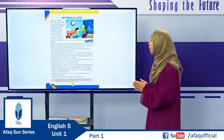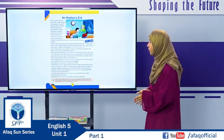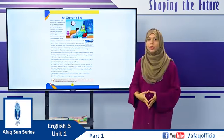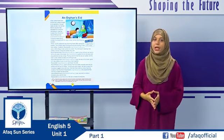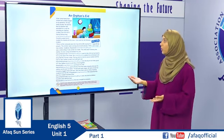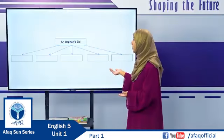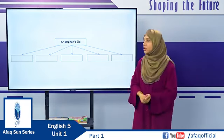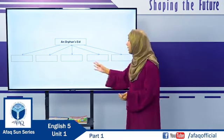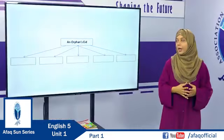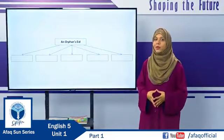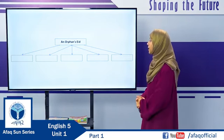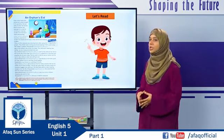Now turn to page number 2. On this page there is a story titled An Orphan's Eid. Look at the picture carefully, relate it to the title, and tell me five words that come to your mind when you read this title and look at the picture. Write five words in the diagram. I hope you have written your five words.